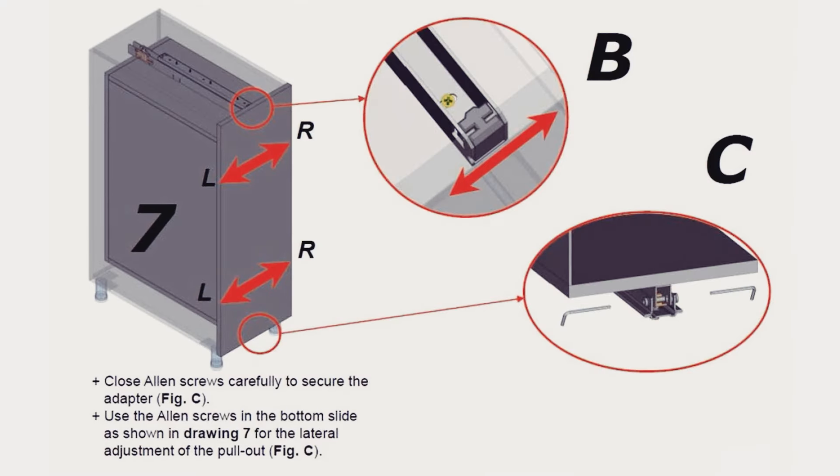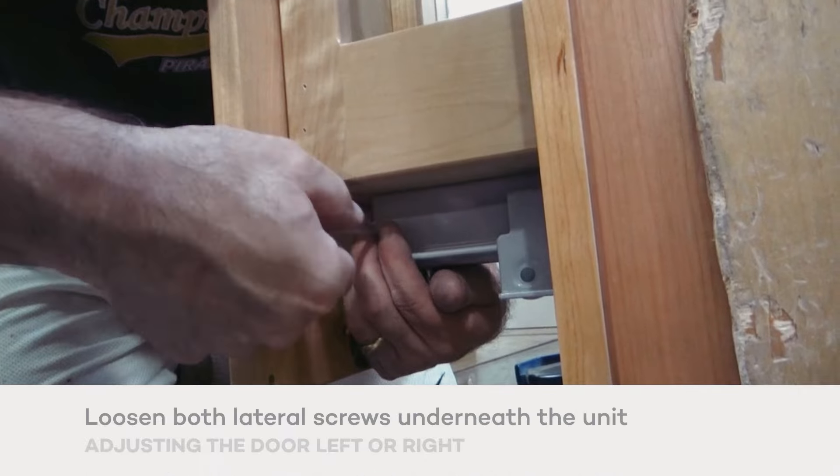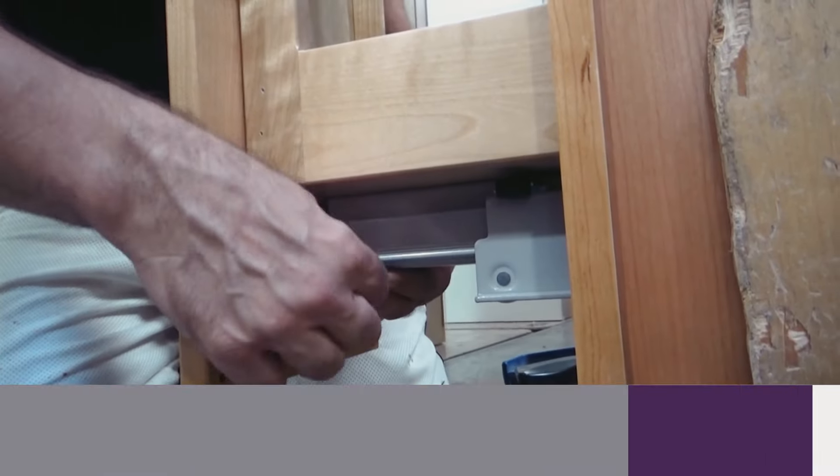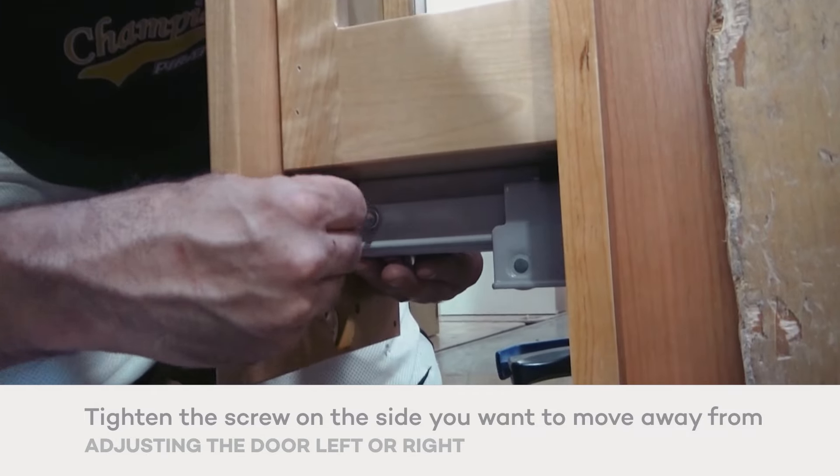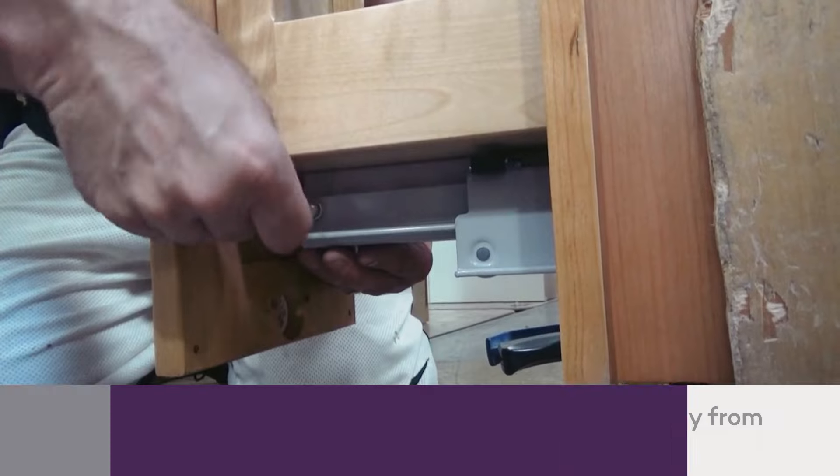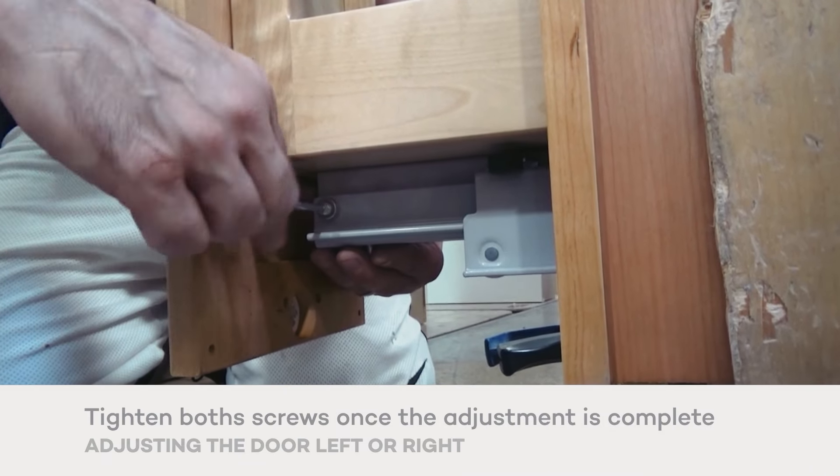To adjust the door left or right, loosen the lateral adjustment screws underneath the unit. There's one on each side. Tighten the screw on the side of the cabinet that the door needs to be adjusted away from and loosen the opposite side screw. When you've finished adjusting the door, tighten any loose screws.